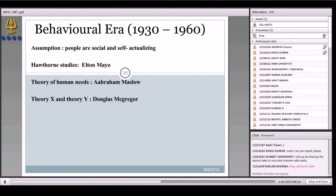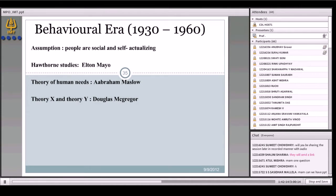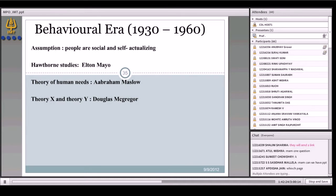Now we'll touch on the behavioral era which existed from 1930 to 1960. The assumption here about people is that they're social and self-actualizing. Major contributors are Elton Mayo with the Hawthorne experiments, theory of human needs by Abraham Maslow, and theory X and theory Y by Douglas McGregor in the conceptualization of management about people they govern.